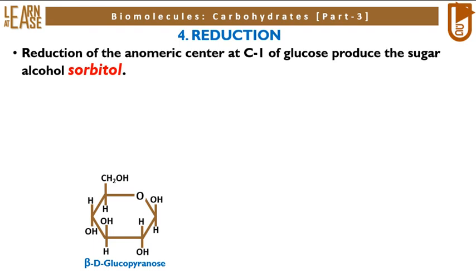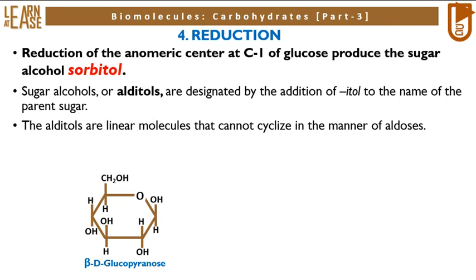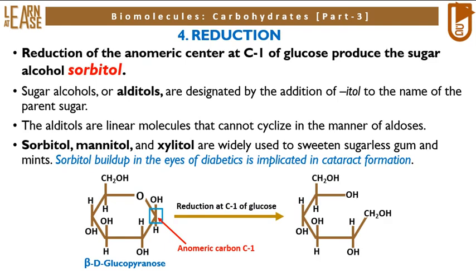The fourth reaction is reduction. Reduction of the anomeric center at C1 of glucose produces the sugar alcohol sorbitol. Sugar alcohols or alditols are designated by the addition of '-itol' to the name of the parent sugar. The alditols are linear molecules that cannot cyclize in the manner of aldoses. Sorbitol, mannitol, and xylitol are widely used to sweeten sugarless gum and mints. Sorbitol buildup in the eyes of diabetics is implicated in cataract formation. In the image, the anomeric carbon is shown with an arrow; reduction at C1 yields sorbitol, which has an open chain structure.